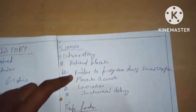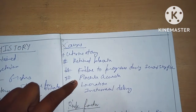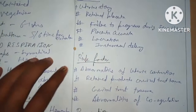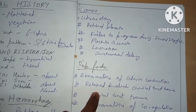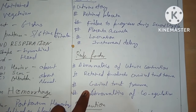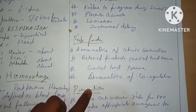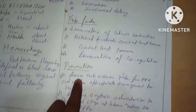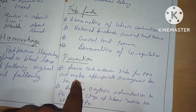Other causes include placenta accreta, lacerations, instrumental delivery. Risk factors include abnormality of uterine contraction, retained products, and genital tract trauma. Abnormality of coagulation is also a cause. For prevention: assess each woman's risk of PPH and make appropriate arrangements for care.